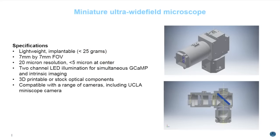This is a lightweight, implantable single-photon microscope. It offers a 7×7 mm field of view; at the perimeter you have 20 micron resolution, and at the center close to single-micron resolution — roughly less than 5 microns. It has a two-channel stimulation system so you can simultaneously record GCaMP and intrinsic signals. It's made from 3D-printed material or stock optical components, can be fabricated for less than a thousand dollars, takes three hours to build, and is compatible with a wide range of cameras including the UCLA miniscope camera.